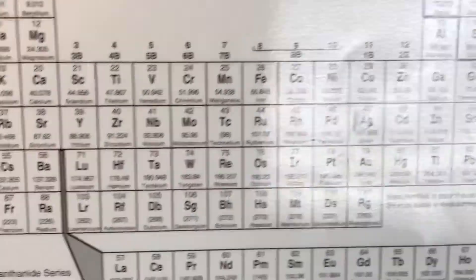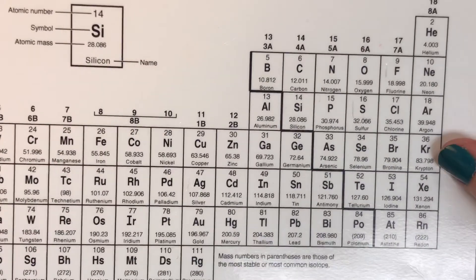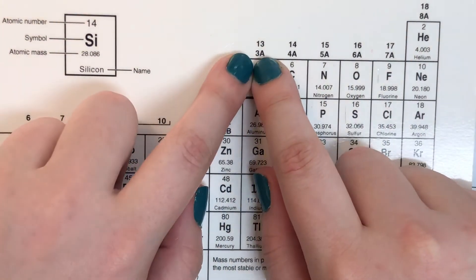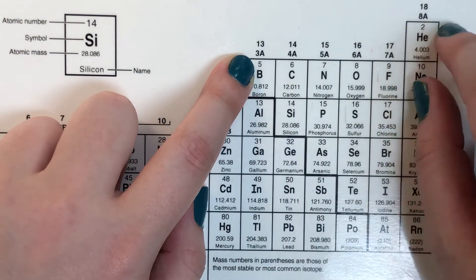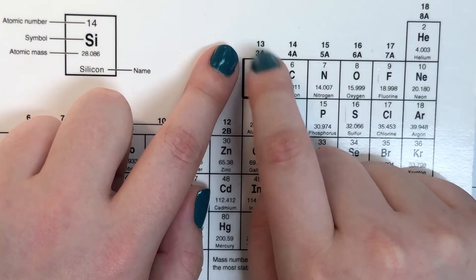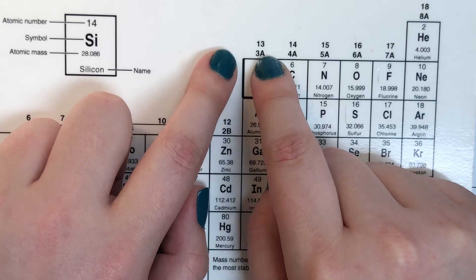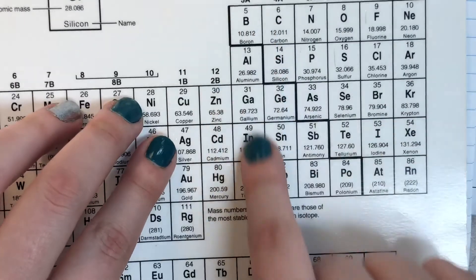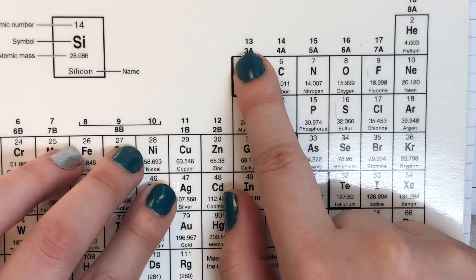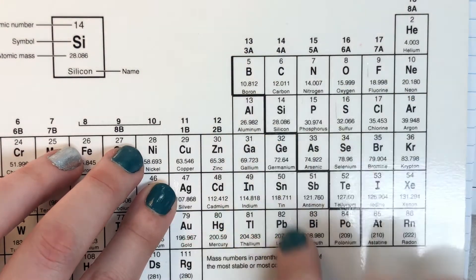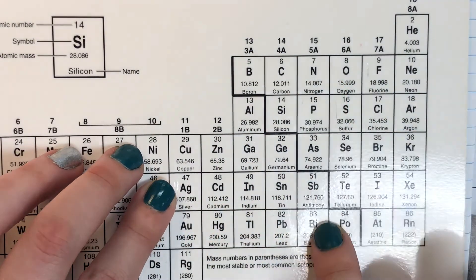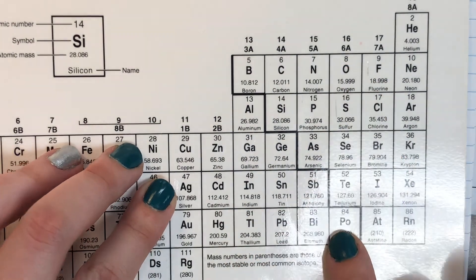So as an example here, we don't have roman numerals on this chart, but they form the same pattern if we use the numbers with the A next to them. Okay, so everybody in this group will have three valence electrons, four valence electrons, five valence electrons, six valence electrons.